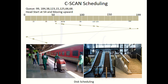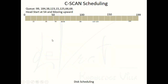The same logic applies to escalators in a shopping mall. Escalators work in one direction only — going upward. People coming down must use the staircase. With limited resources, such as only two escalators, using them in a single direction means more people benefit. The same single-direction logic is applied in C-SCAN scheduling.